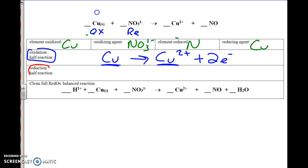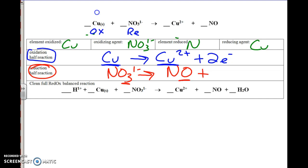Next I'm going to go to the reduction half reaction, and that's going to be NO3 1 minus going to NO. I go back up to 6A — balance all elements besides hydrogen and oxygen, that's done. 6B — balance the oxygens by adding water to the side that needs more oxygens. So I have 3 oxygens here and 1 oxygen here, so I add 2 H2O's to bring the number of oxygens on each side to the same amount. Pause this and see if you understand what I'm talking about, then start the video up again.